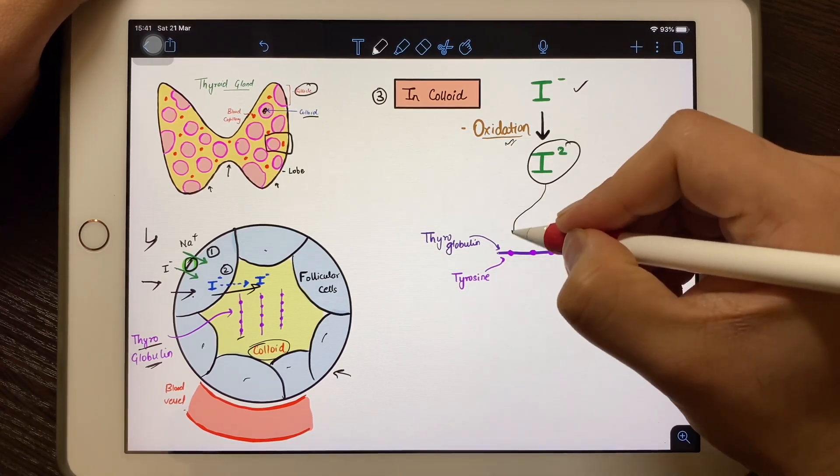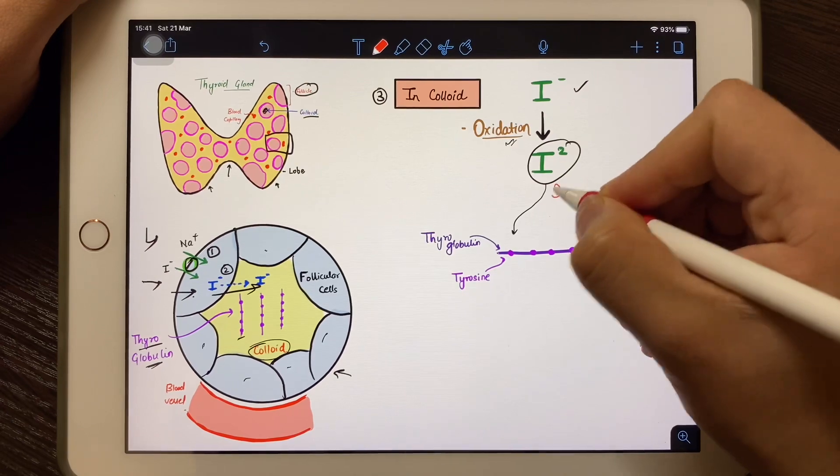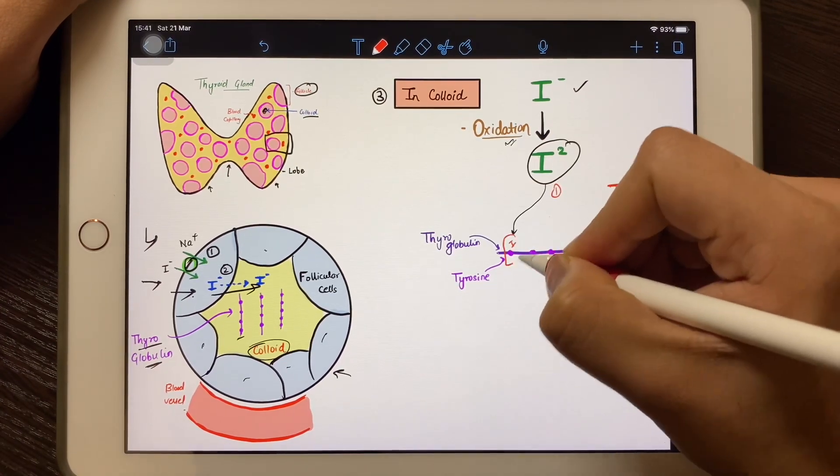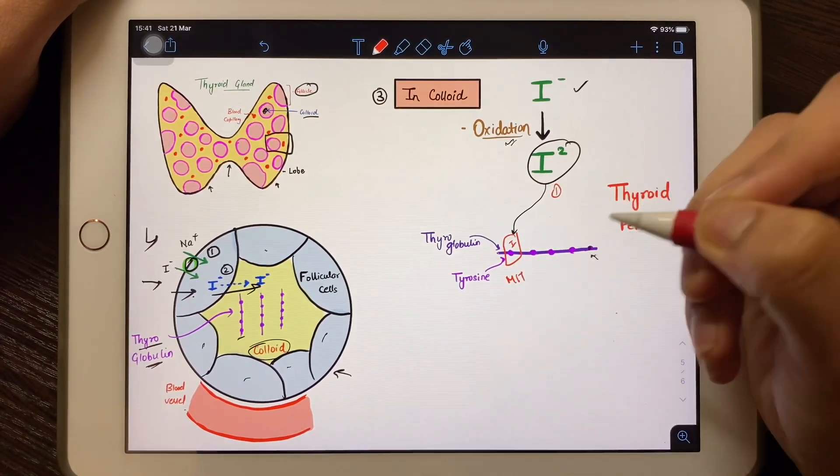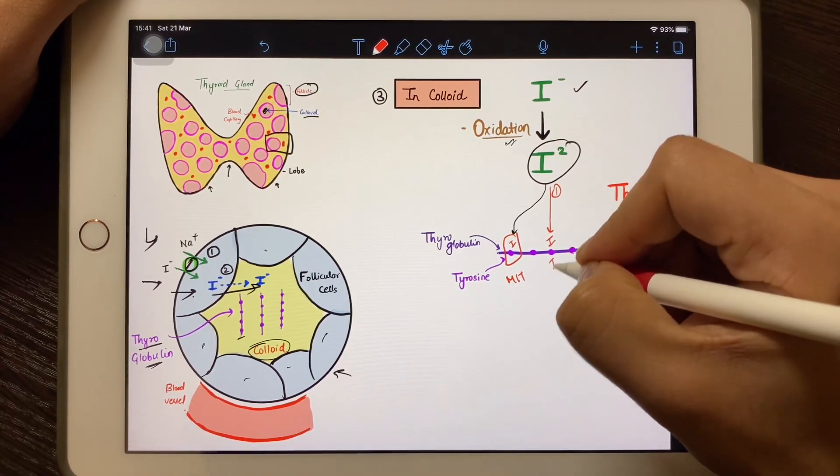If one iodine joins with tyrosine, this is known as MIT or monoiodotyrosine. If two iodines get joined with tyrosine, then this is known as DIT or diiodotyrosine. This reaction is known as organification.